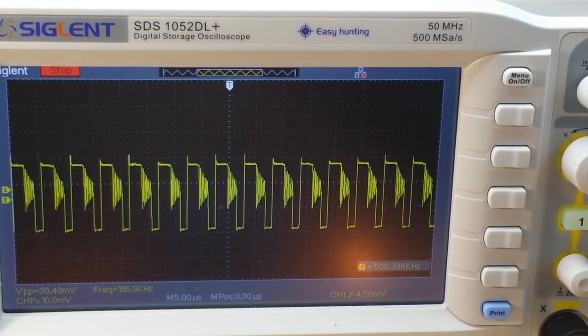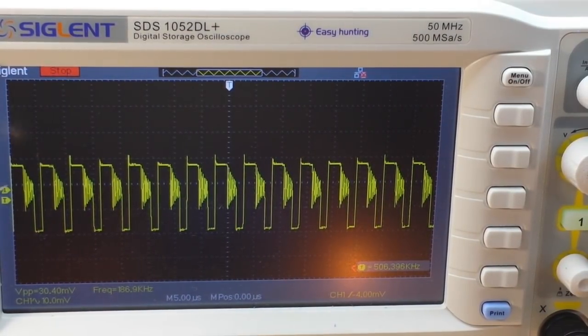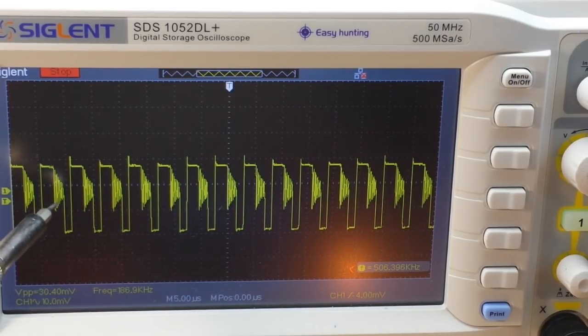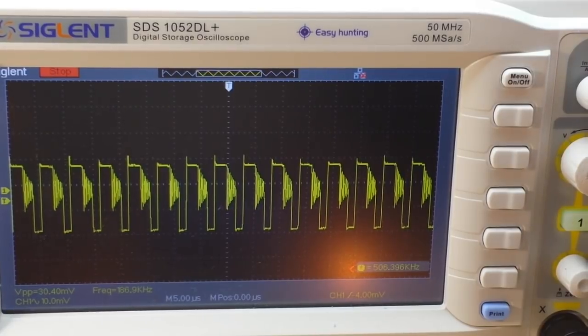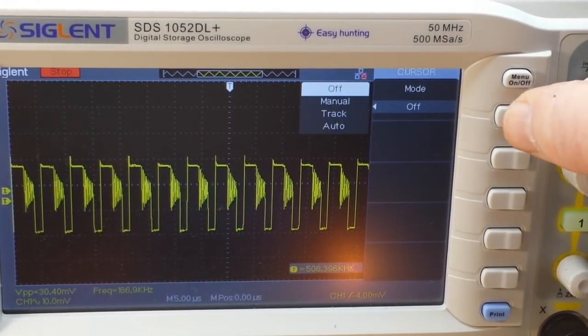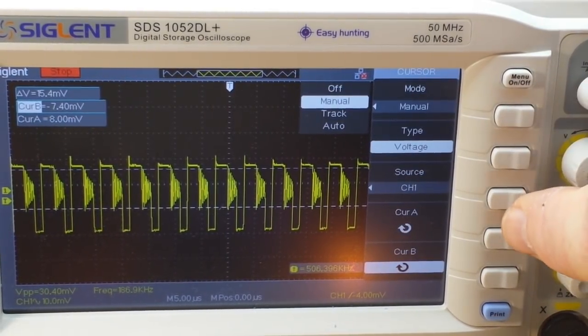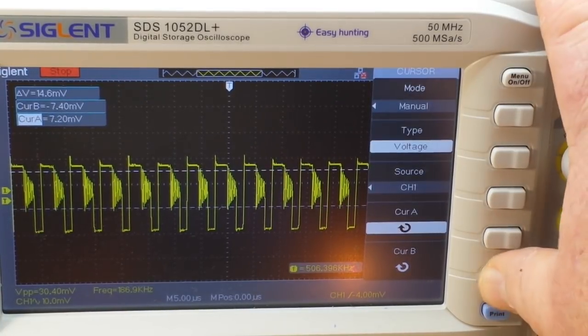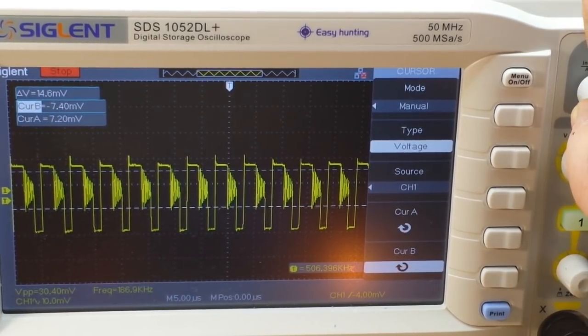Alright, so what we're seeing here is obviously a square wave. But if you look here, right at the zero crossing point on each of these square waves, there is an excessive amount of ringing. We're at 10 millivolts peak to peak. Let's grab our cursors and do voltage again and look and see how much that ringing is actually showing us.